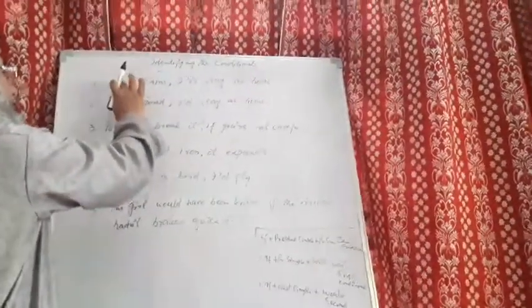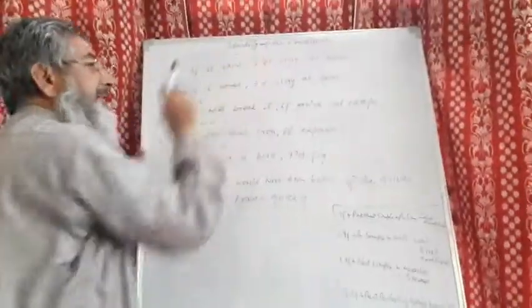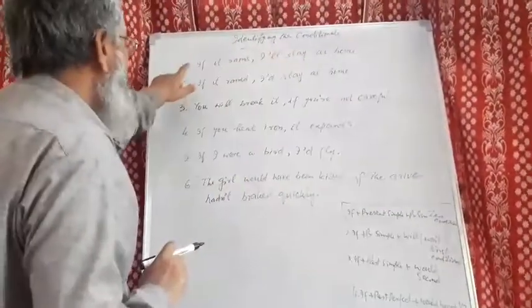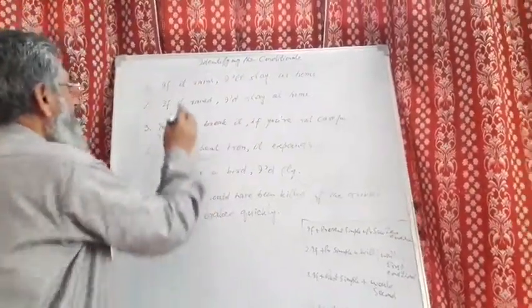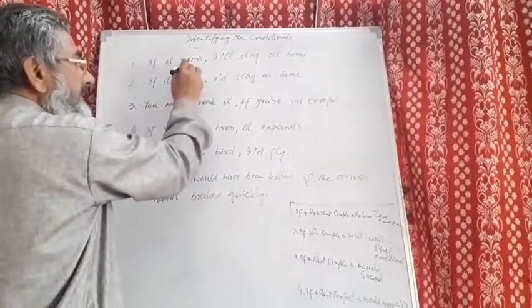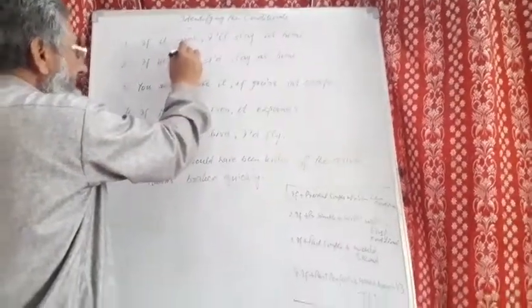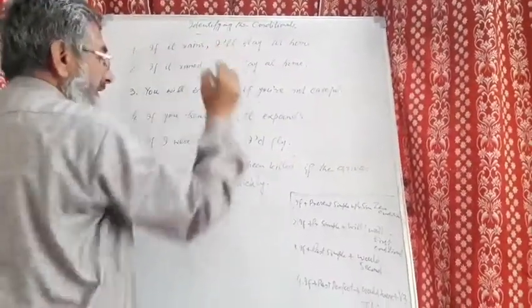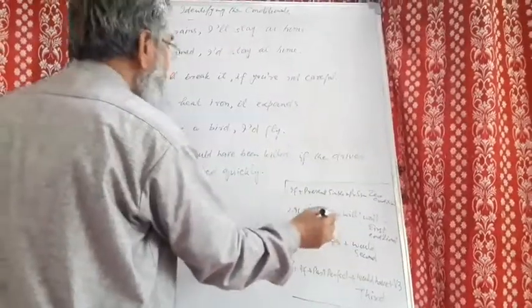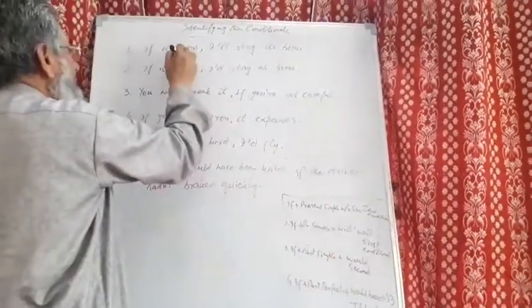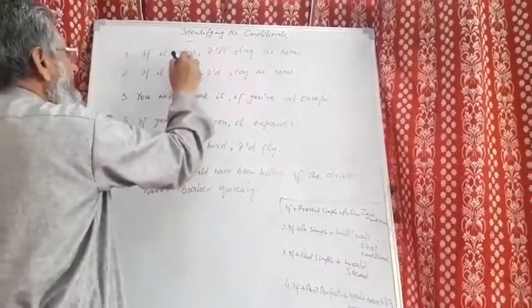Here are some sentences and we have to identify what type of conditional each sentence is. Number 1: if it rains, I will stay at home. If it rains — present simple — and here it is real. So it is the first conditional or real conditional.